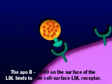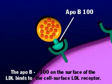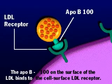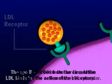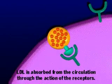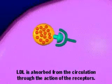The ApoB100 on the surface of the LDL binds to the cell surface LDL receptor. LDL is absorbed from the circulation through the action of the receptors.